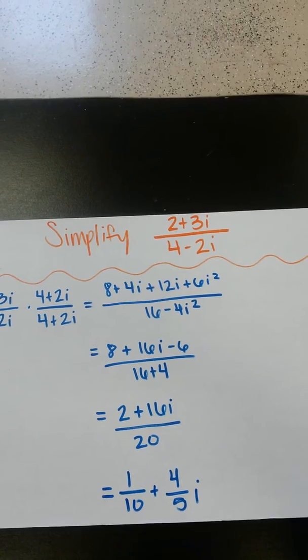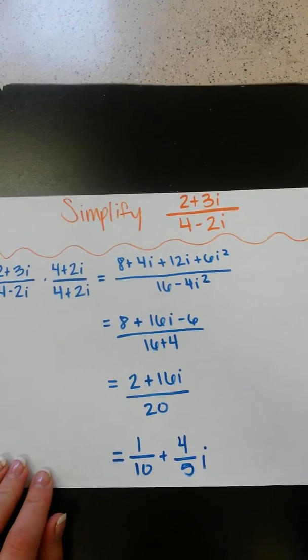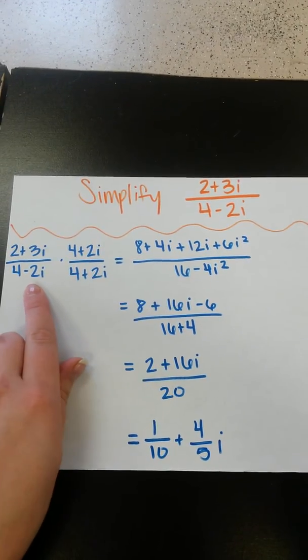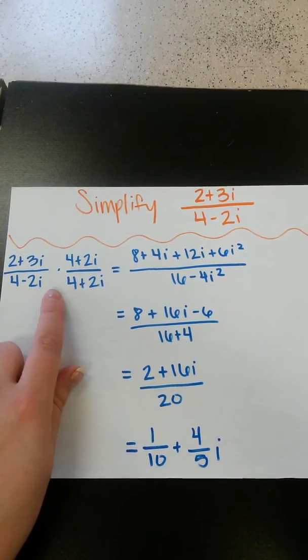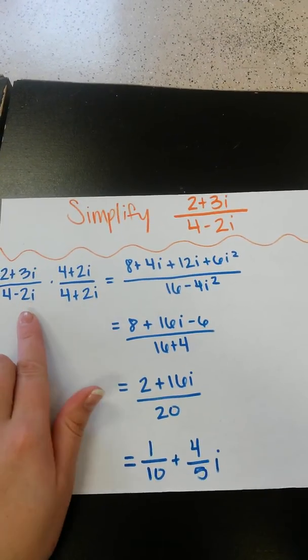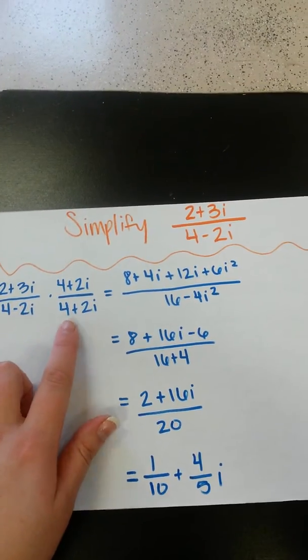So lastly, we want to simplify 2 plus 3i over 4 minus 2i. So first, here's our original problem. And what we're going to do first is multiply the numerator and the denominator by the denominator's conjugate, which is the opposite of that.